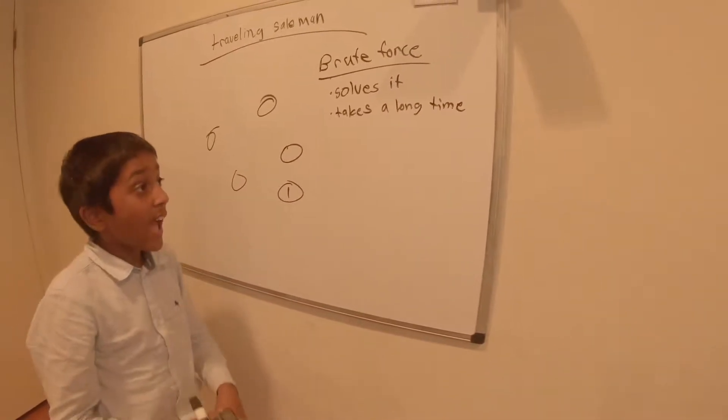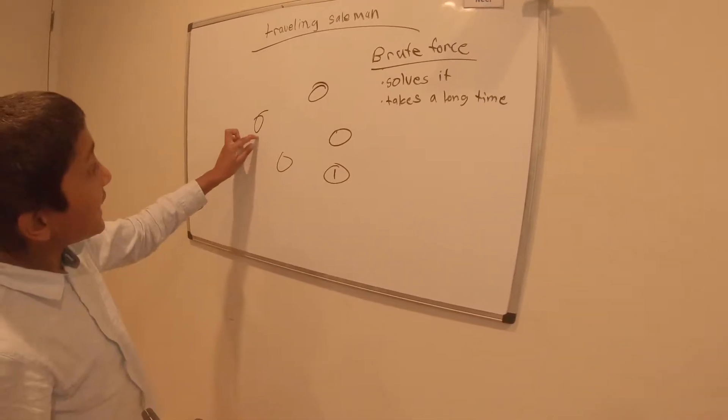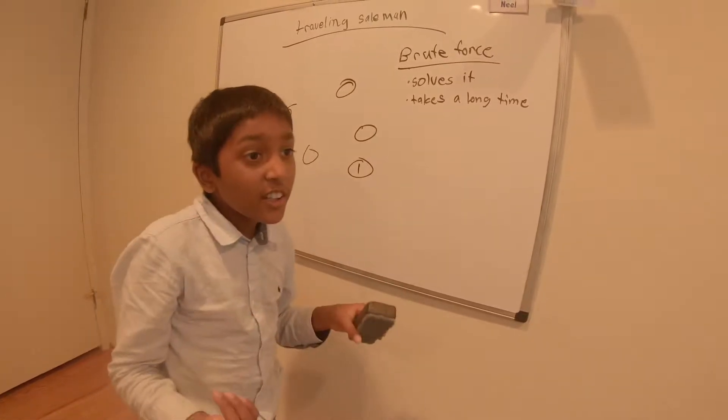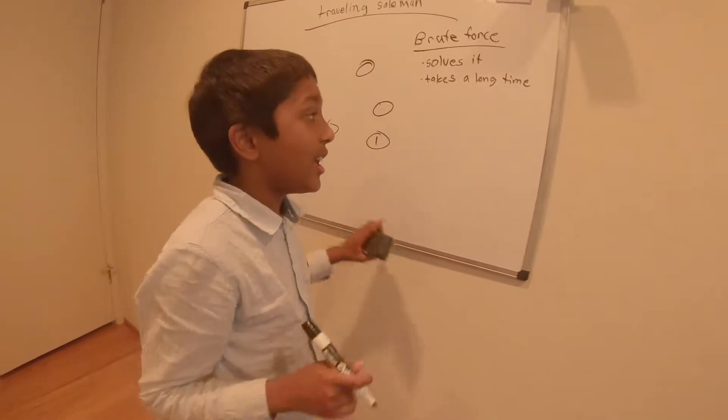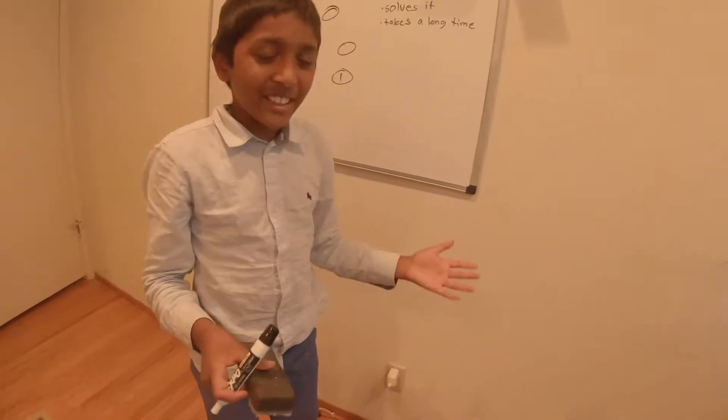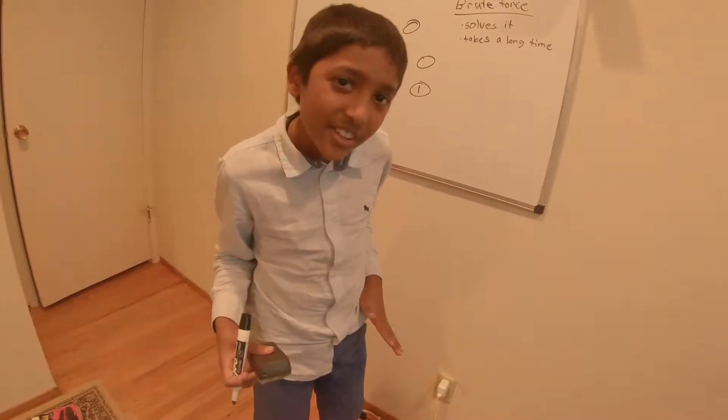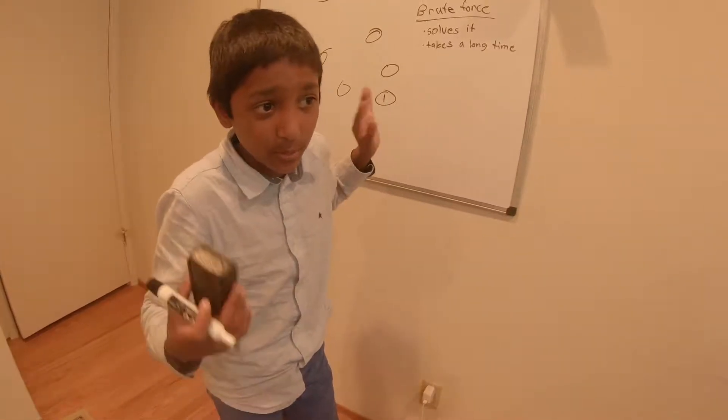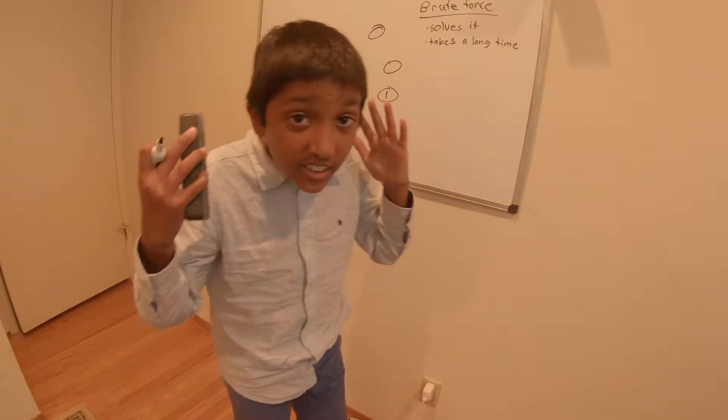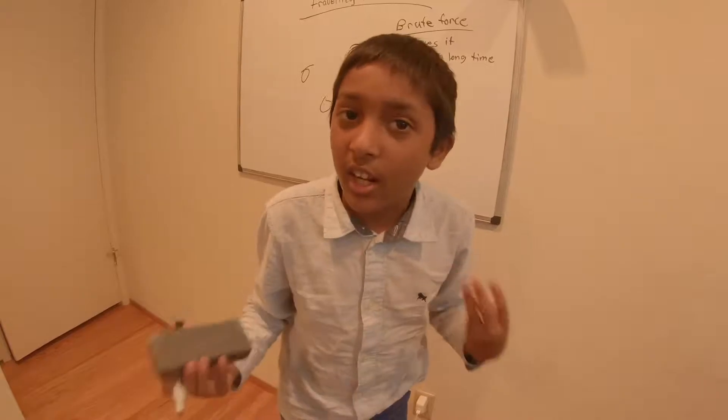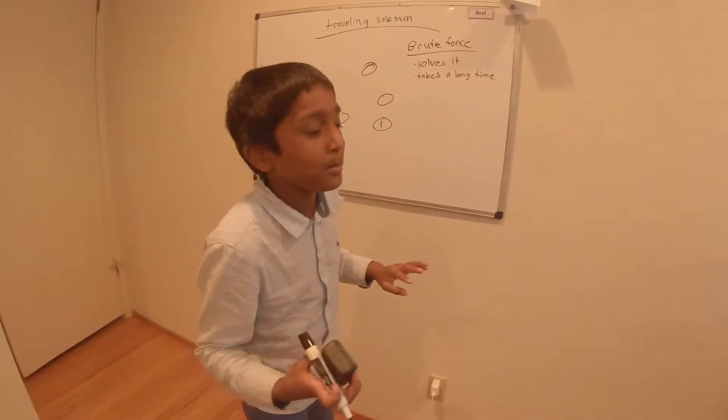In fact, the time grows exponentially with each place you add. So if you're going to solve traveling salesman, you cannot use brute force because it's not going to help you much. Like an actual salesman might have hundreds of houses—it's gonna take like six months to do this, so it's useless. What you want is something that can solve this in a couple of seconds, normal computer time.